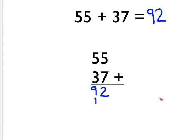So the main difference with this one was that when I added up the units column, I got 12, and I had to remember to split that up into the 2 and put the 1 down at the bottom of the next column.